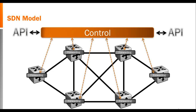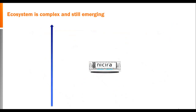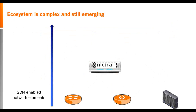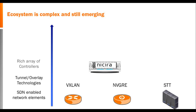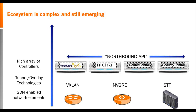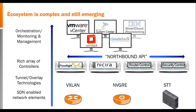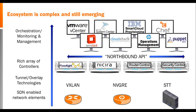No one vendor is going to be able to provide this entire model. Instead, we're going to have to think about an ecosystem of SDN products designed to work together. That ecosystem is going to include standard networking elements — routers, switches, and virtualized data centers — tunnel and overlay technologies to allow you to extend and flatten the network, including VXLAN, NVGRE, and STT. It will include a rich array of controllers including Floodlight or NYSERA, route and security control technologies, and an orchestration, monitoring, and management layer. These will have interactions through a common set of APIs with applications that will drive the business value directing the network.